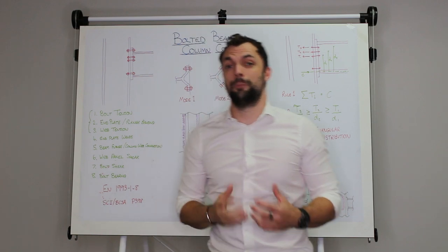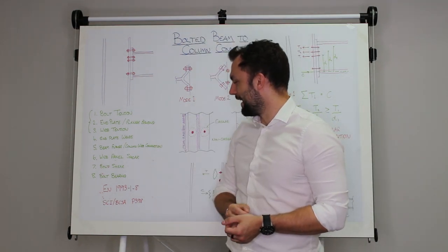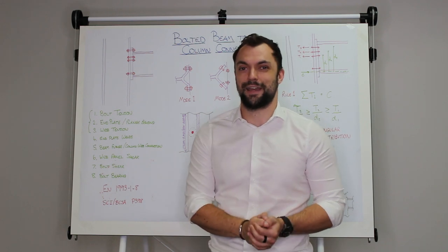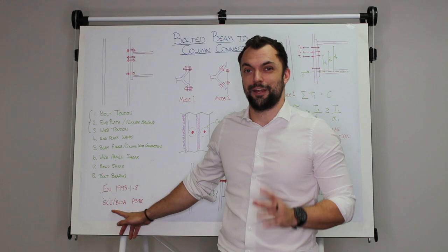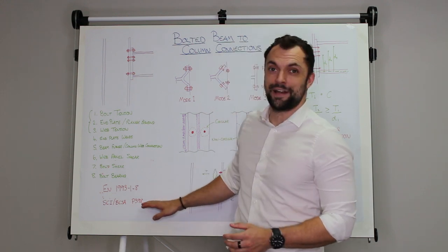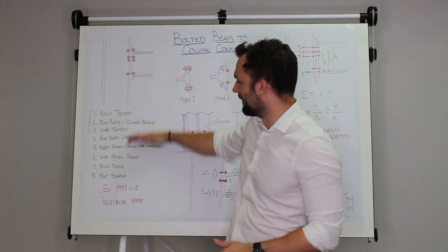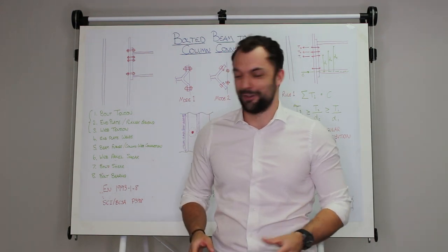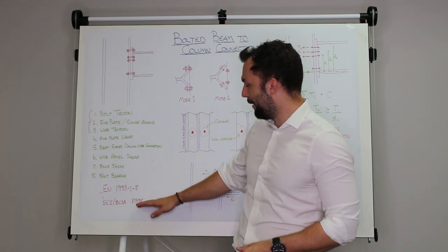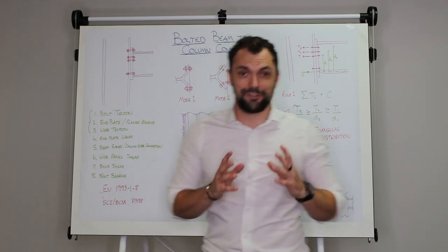So this all applies to moment resisting joints and the way to design these is listed in Eurocode 3 Part 1-8. But in my opinion an even better document is the SCI BCSA joint publication P398, and that basically gives you a step-by-step guide to all of these and how to calculate each one with all the equations and loads of clever diagrams. So if you're going to try anything I would give that a good read because that will tell you exactly how to do all of this stuff.